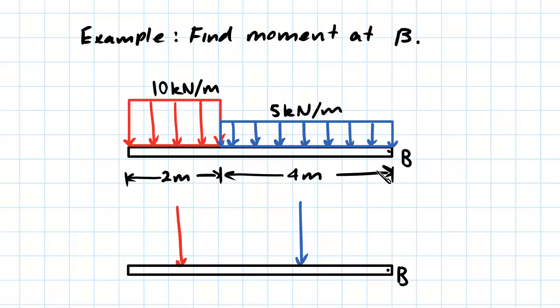From our previous theory, we know that for uniformly distributed loads, the equivalent point load acts at their center. So since this is 4 meters long, the distance between this point load and B is 2 meters.